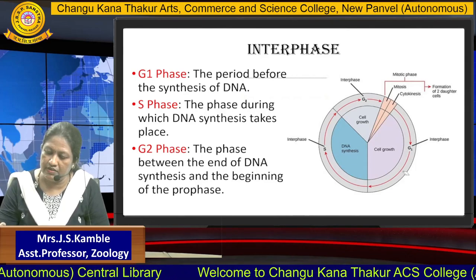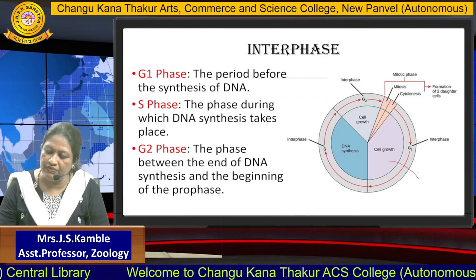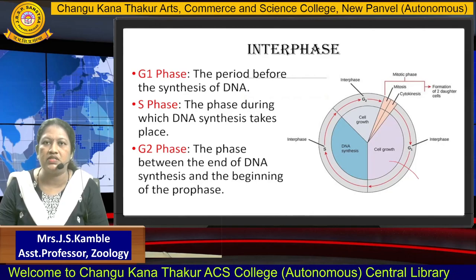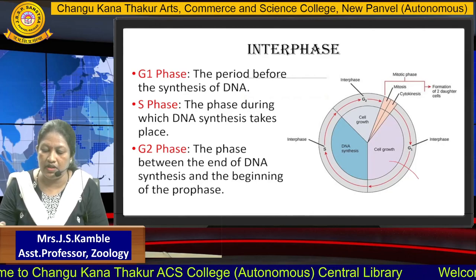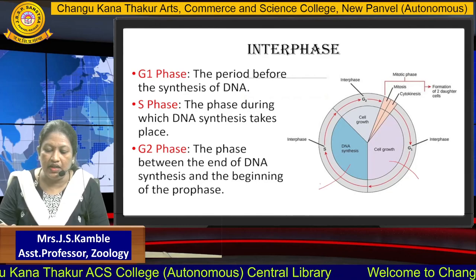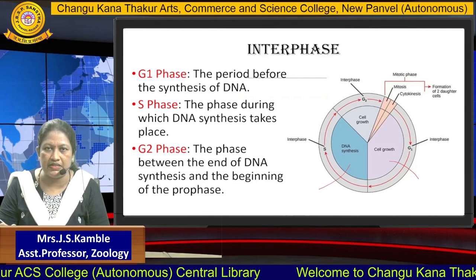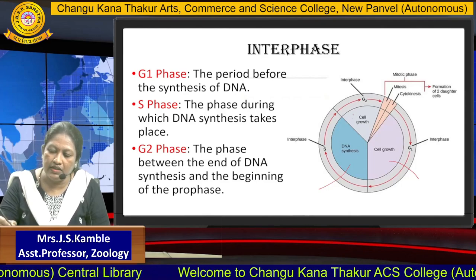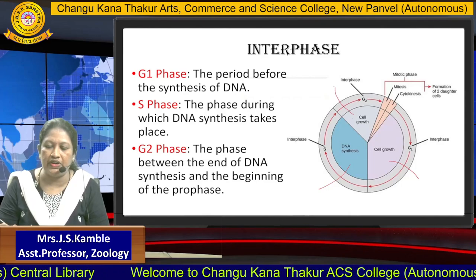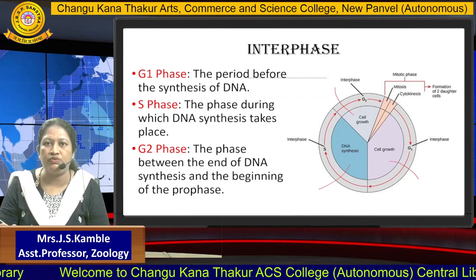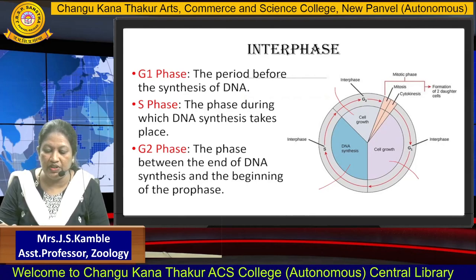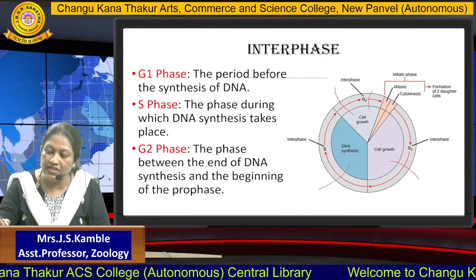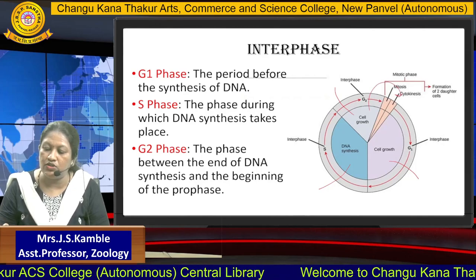G1 phase is also called as Gap 1 phase; it is the period before the synthesis of DNA. S phase is the phase during which DNA synthesis takes place; it is also called the Synthesis phase. The third phase is G2 phase, or Gap 2 phase — it is the phase between the end of DNA synthesis and the beginning of prophase. After the G2 phase, the cell enters into the mitotic phase.